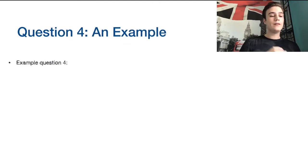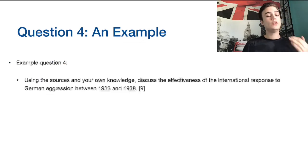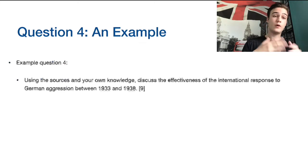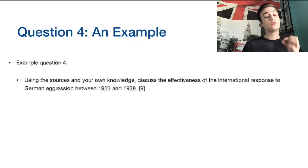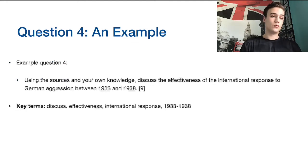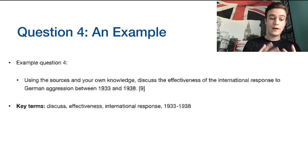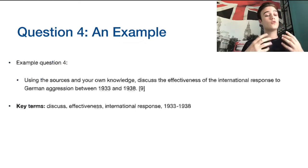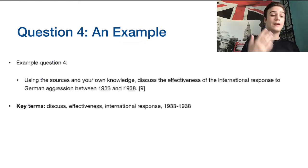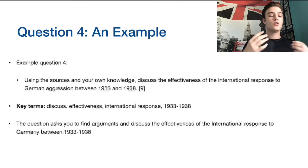For our example, once again from May 2019, the question states: 'Using the sources and your own knowledge' — that clause is always in front of any paper one question — 'discuss the effectiveness of the international response to German aggression between 1933 and 1938.' The key term is 'discuss.' You need to discuss the effectiveness of the international response — not German aggression itself, but the response to it. And importantly, don't talk about events outside of the 1933 to 1938 timeframe.